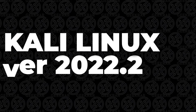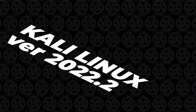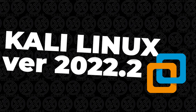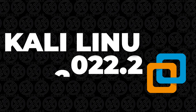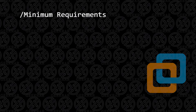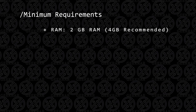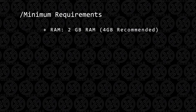Welcome back to the channel. In today's video, we'll be installing Kali Linux version 22.2 in VMware Workstation Pro on a Windows 11 PC. Before we get started, let's take a look at the minimum requirements. For RAM, the lowest that you can have is 2GB, and 4GB is recommended.